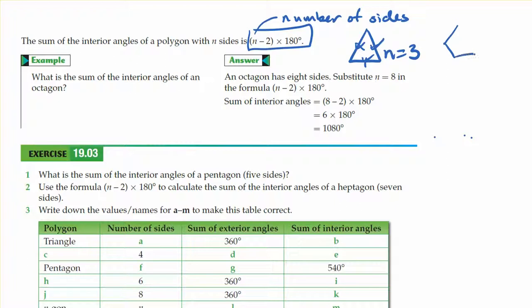For this shape, we would have 1, 2, 3, 4, 5, 6, 7 sides, so you'd say n is equal to 7. And to calculate how many degrees are inside of it,